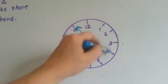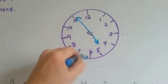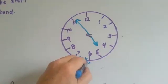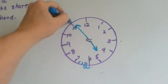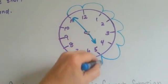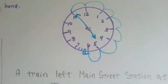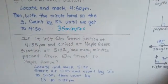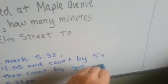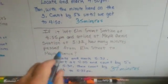When the minute hand gets here, it'll be 5 o'clock. When it gets all the way down to here, the minute hand, it'll be 5:30. And we know that there's little increments in between here. So if that's 5:30, 5:31, 5:32. So we're going to count by 5s: 5, 10, 15, 20, 25, 30, 35, and then we're going to count by 1s: 36, 37. So we know it was 37 minutes in between Elm Street Station and Maple Avenue.